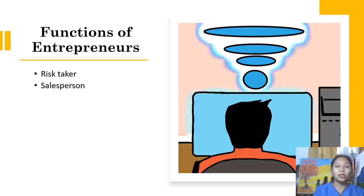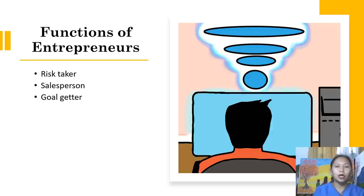An entrepreneur is also a salesperson. An entrepreneur must be a good salesman; if one cannot sell, one cannot succeed. They are responsible for marketing and advertising their products or services. An entrepreneur is also a goal-getter. Entrepreneurs do not only set goals but also try to achieve them. Most people know how to set goals, but few know how to achieve them. The entrepreneur should set a big goal, which may seem scary for an ordinary person.